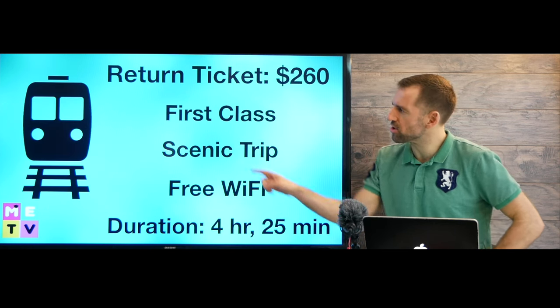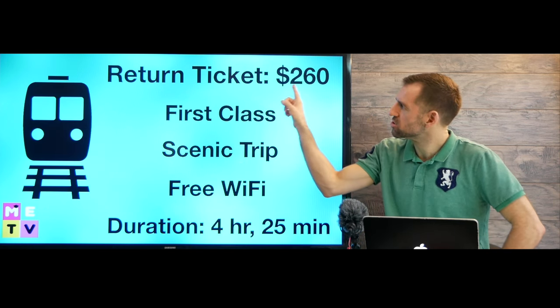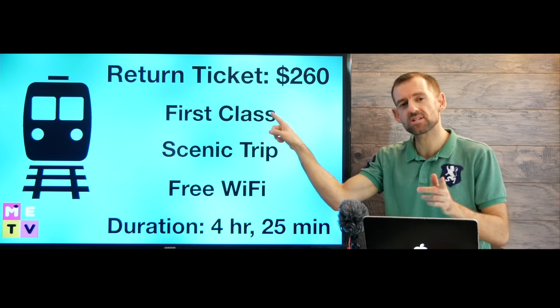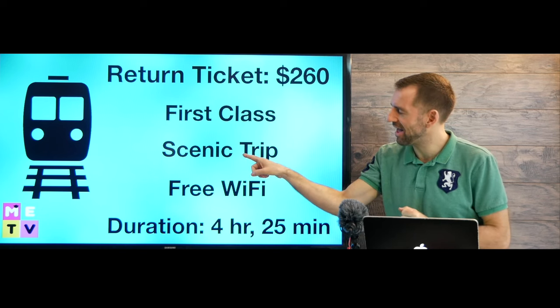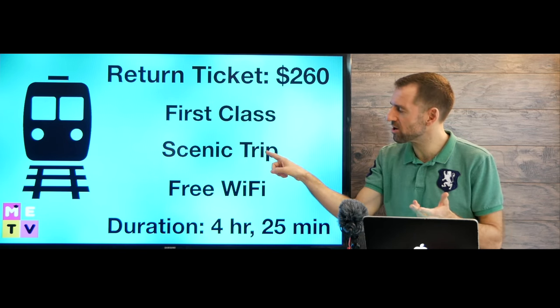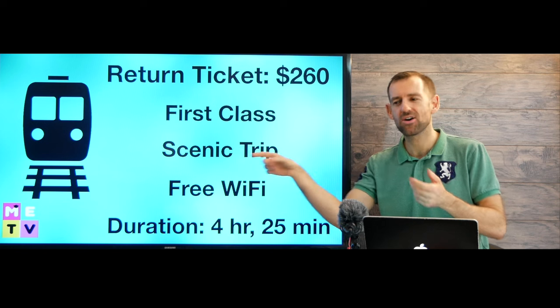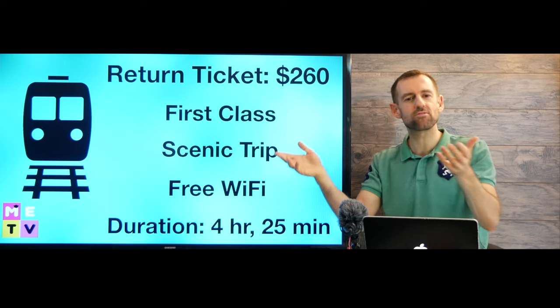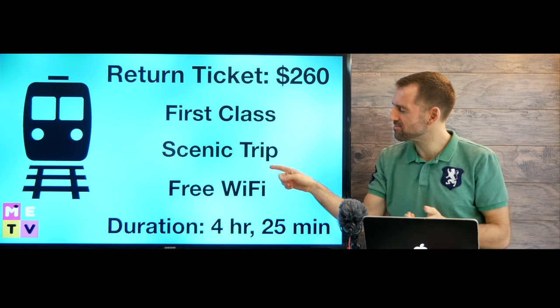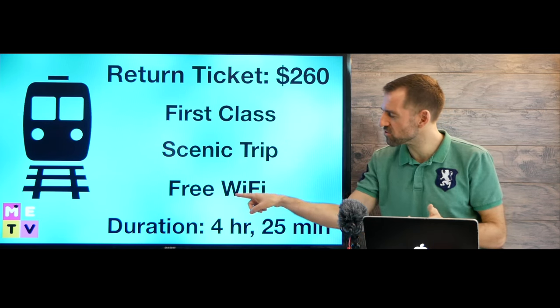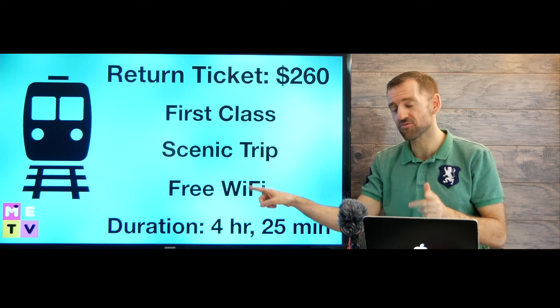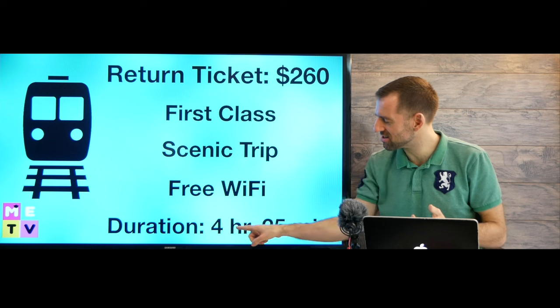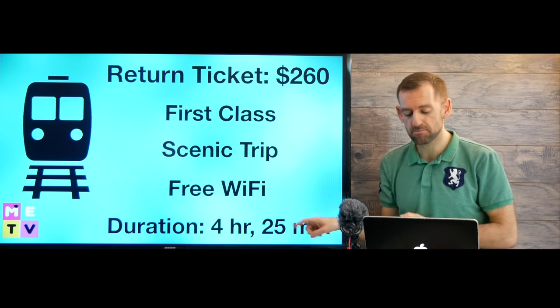Let's take a look at the train. The train costs $260 for the return ticket and it's a first class ticket. It has a very scenic trip. Scenic means lots of nice scenery, lots of nice things to look at - mountains, rivers, trees. Also it has free wifi. That's pretty good. The duration is four hours and 25 minutes.